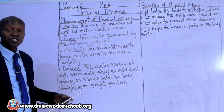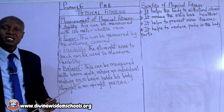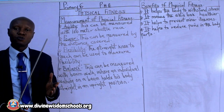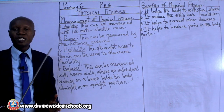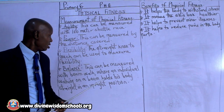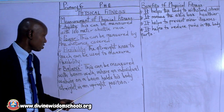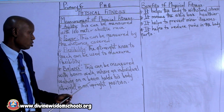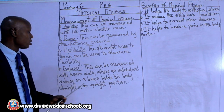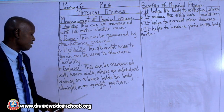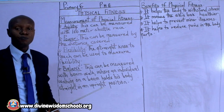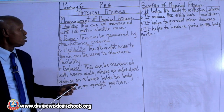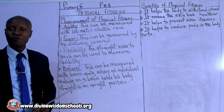Number four component is balance. Balance is the ability to keep to a particular position without falling or moving — that is what we said last week. Balance can be measured with beam work, where an individual walking on a beam holds his body straight in an upright position. These are the ways we can measure the four components of physical fitness.